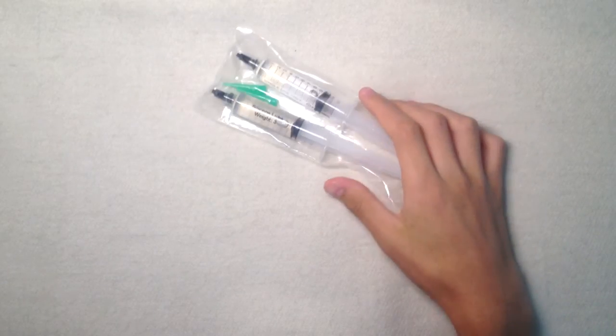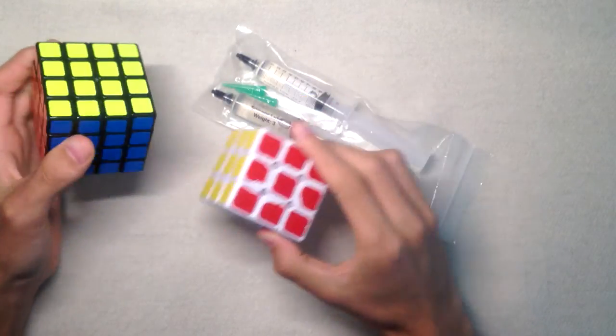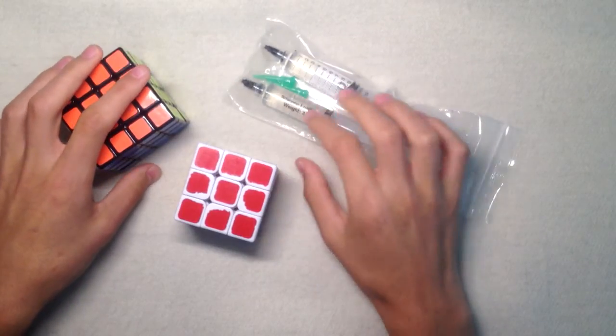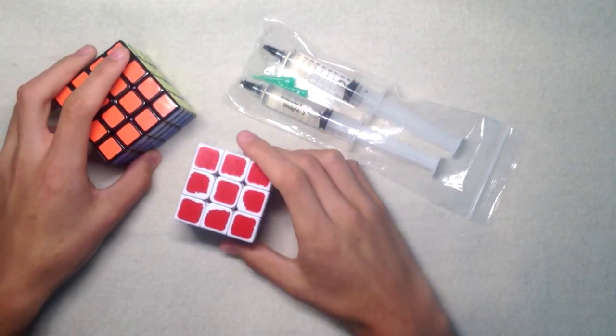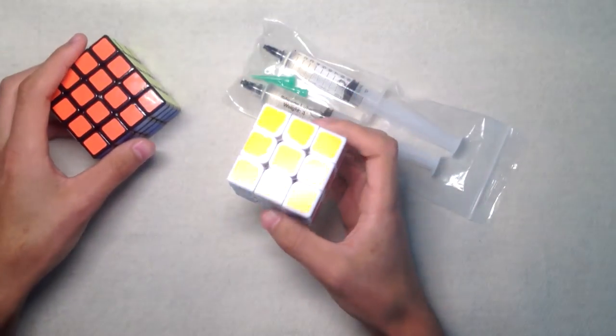I am back and I have lubed my Fang Shishweng Ren V2 and the Moyu Ayosu with the weight 5 lube for the core and the weight 3 for the pieces. I have done many solves on both and it had a different effect on them.